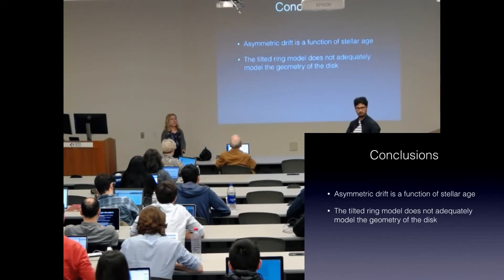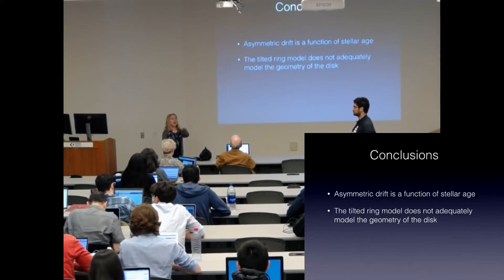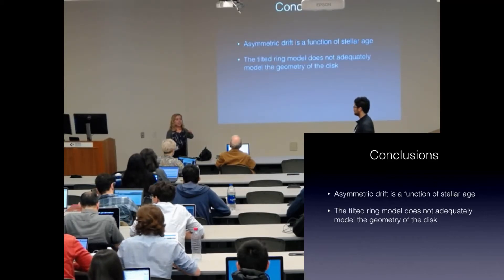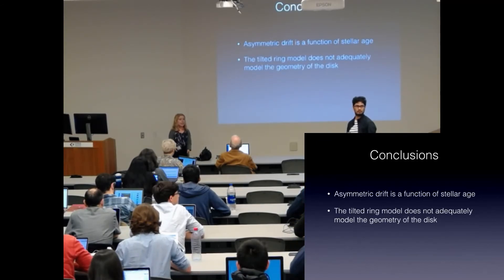Yes. So the gas disk is especially complex. It has warps. It also has an outer warp that projects into the inner radii. So it looks like there's a warp within a warp or multiple warps in the inner regions of M31, but that's a projection effect. So these models also don't adequately account for that.